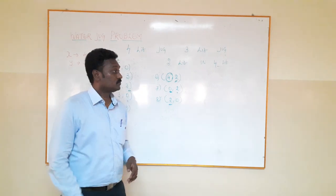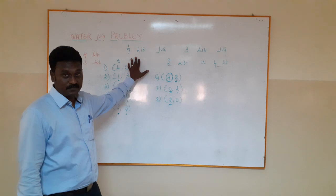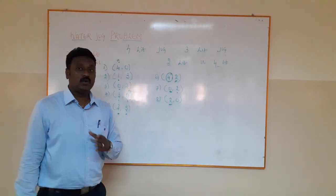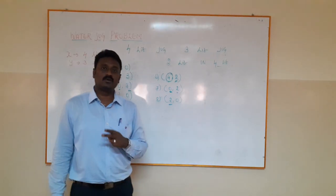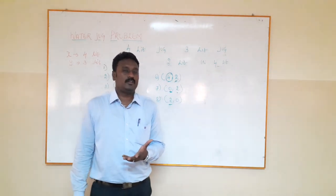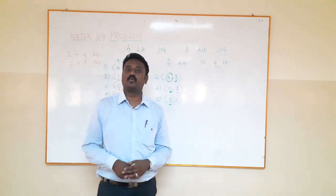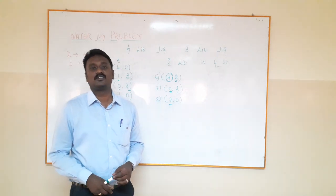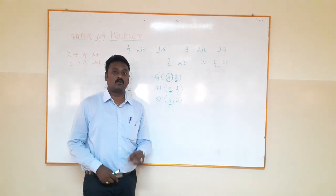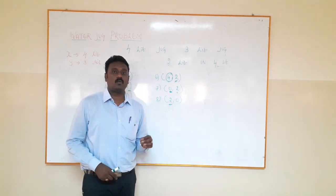First, what is the water jug problem? We have two jugs: one is a four-litre jug and the second one is a three-litre jug. You have to fill exactly two litres of water in the four-litre jug — without any measuring equipment. Without any measuring equipment, you have to fill exactly two litres of water inside the four-litre capacity jug. Apart from that, you can use a water source for filling the jugs.